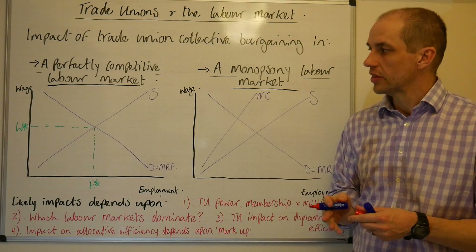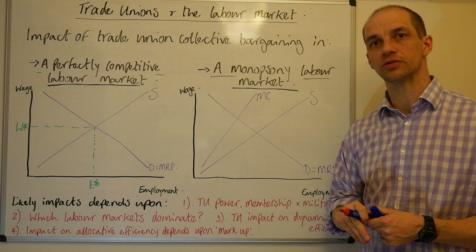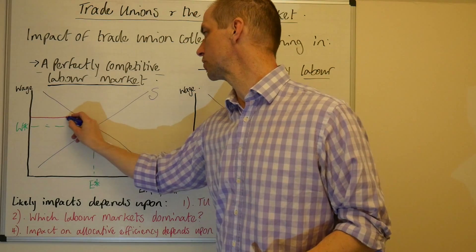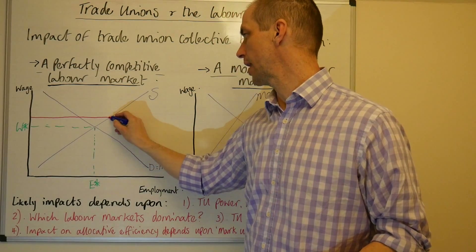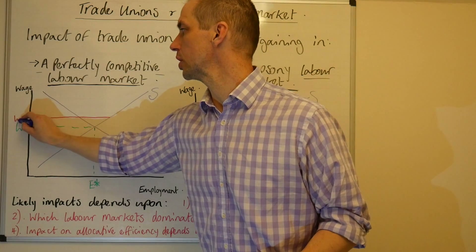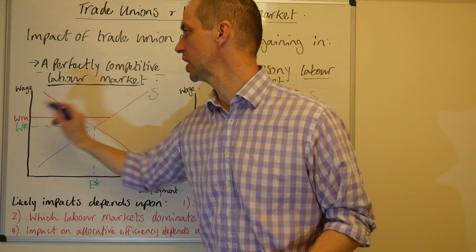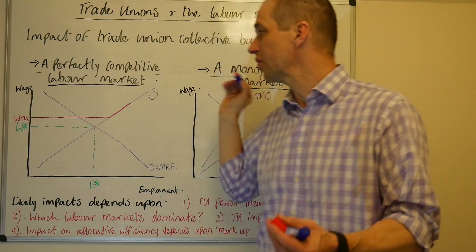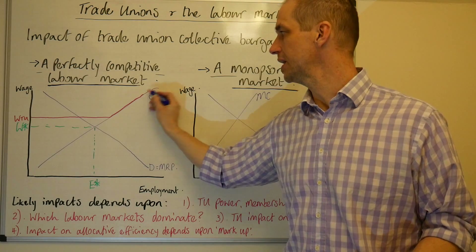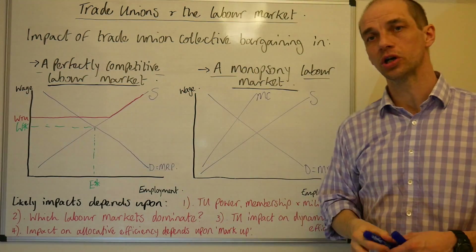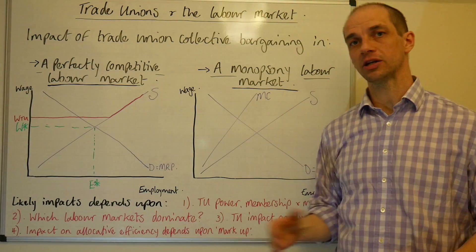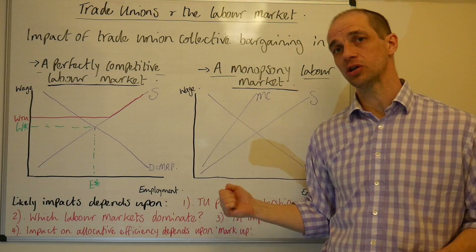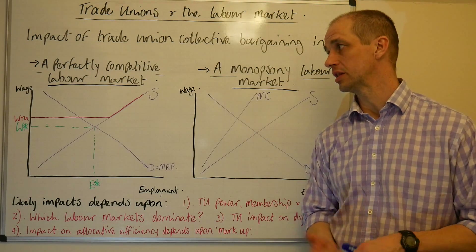The trade union comes along and they negotiate better wages for all unionised workers. The impact of that would be to bring up the actual average wage rate. If I just denote that by W-TU, we can see that there. In effect, what happens is the supply curve kinks, because it means that for unionised workers the lowest wage they can actually be paid now is W-TU. In effect, it has the same sort of repercussions as a minimum wage would in this marketplace.